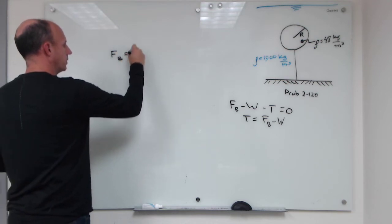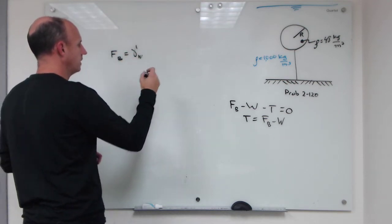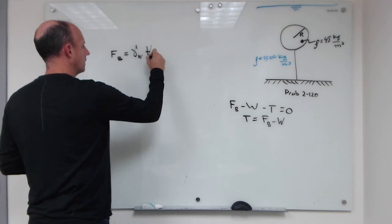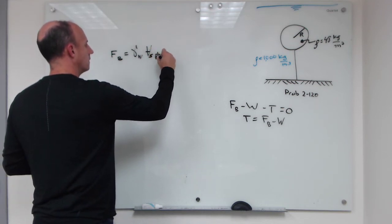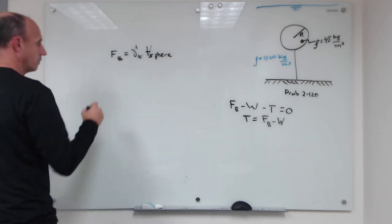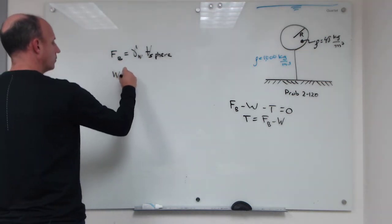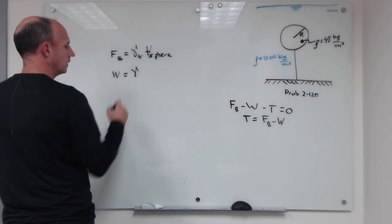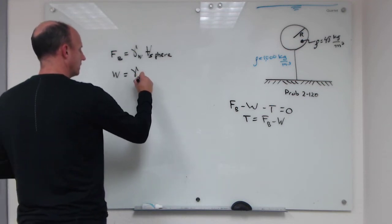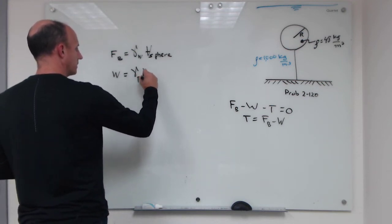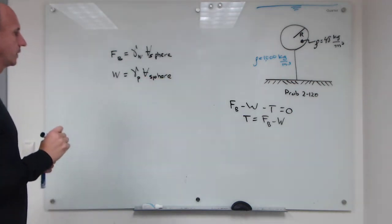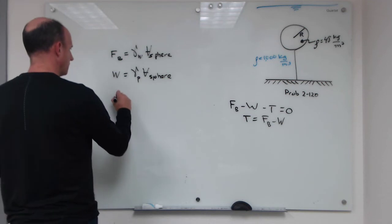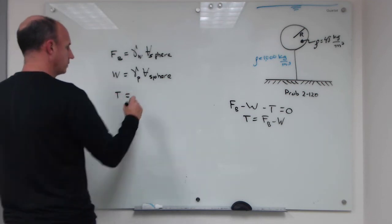So we can write that down: the buoyant force will be the unit weight of water times the volume of the sphere, and the weight will be equal to the unit weight of the plastic. So you quickly see that the tension is just going to equal the volume of the sphere